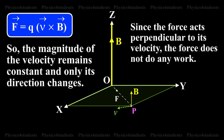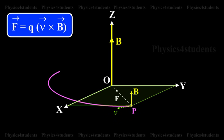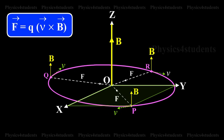So, the magnitude of the velocity remains constant and only its direction changes. The force F acting towards the point O acts as the centripetal force and makes the particle to move along a circular path. At points Q and R, the particle experiences force along QO and RO respectively.